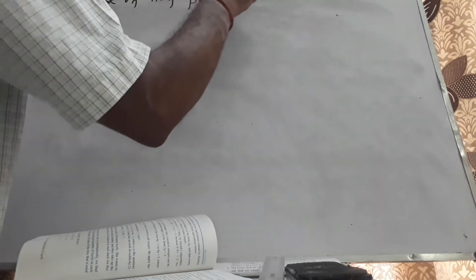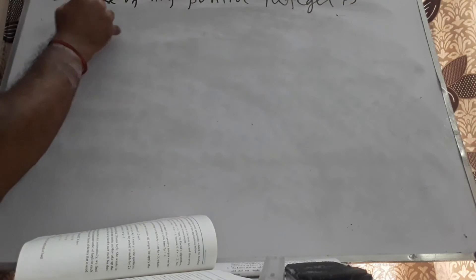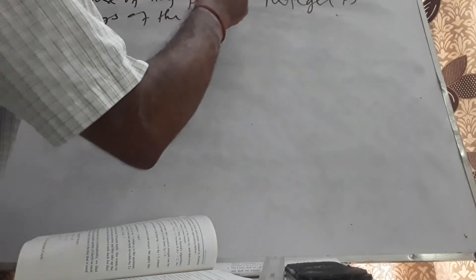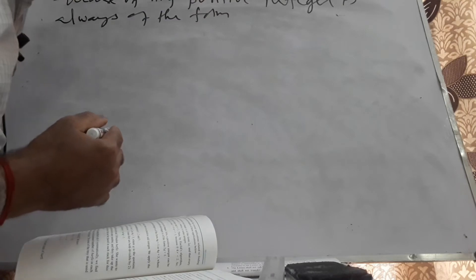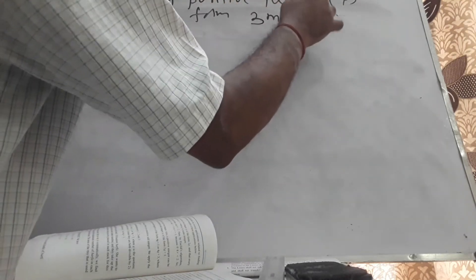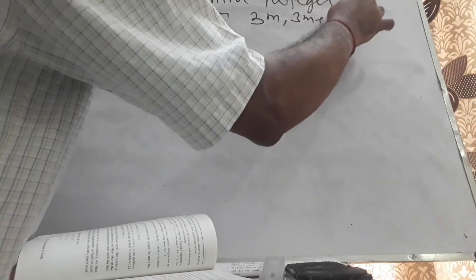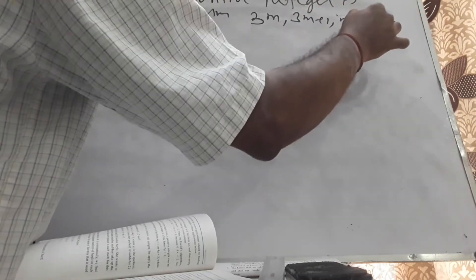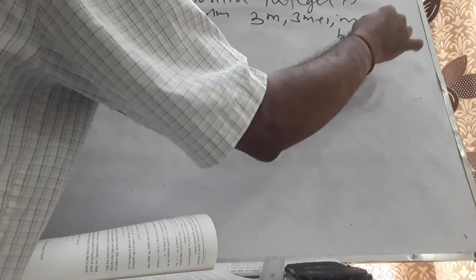Next problem: show that the square of any positive integer is always of the form 3m or 3m+1, where m is some integer — m belongs to Z, the set of integers.